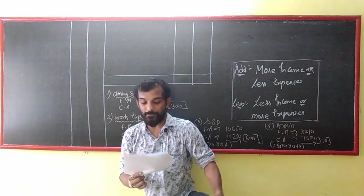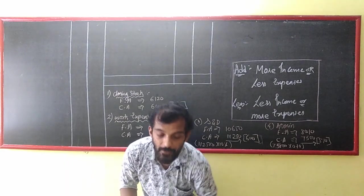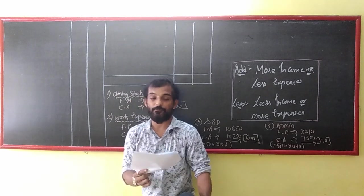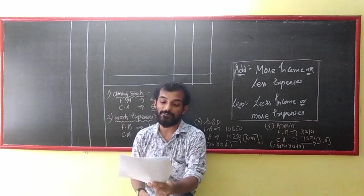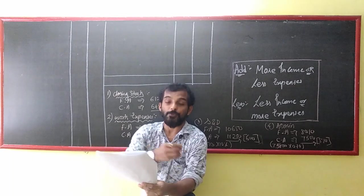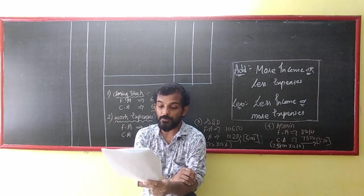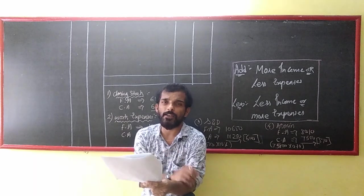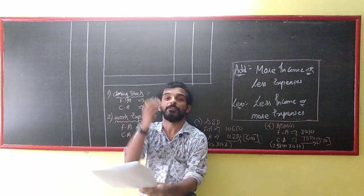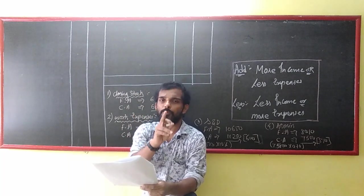We are performing the Trading and Profit & Loss account. In the trading account, the accounts are as follows: purchases are 37,815. Less closing stock is 6,120. Opening stock plus purchases less closing stock gives the cost of goods sold. Closing stock in P&L is a credit — it is income, that is the reason why we take it as income.